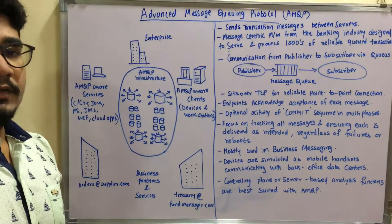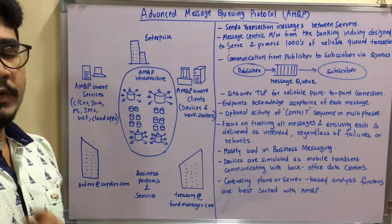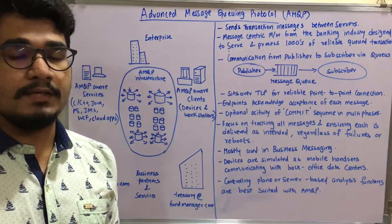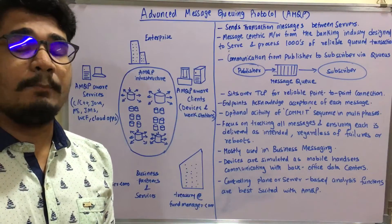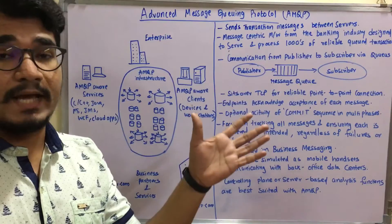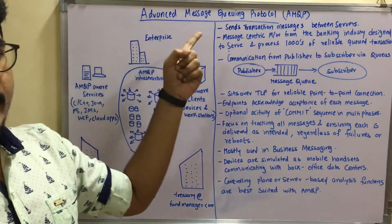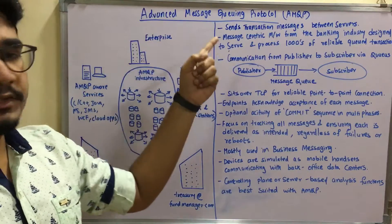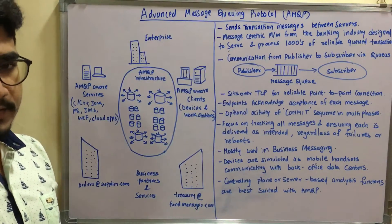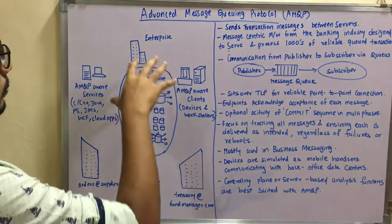'Advanced' stands for advanced business, which is currently booming in the banking sector. For all those transactions which happen daily — net banking, UPI, or any other bank-based applications — IoT systems have been specially designed. AMQP, the Advanced Message Queuing Protocol, is mostly used in the banking industry and sector.